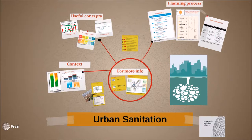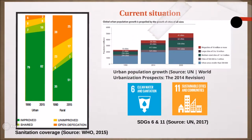The Millennium Development Goal target set to halve the proportion of the population without basic sanitation by 2015 was not met. As seen in the graph on the left, the urban population with access to improved sanitation has increased from 79% to 82% between 1990 and 2015. Even though coverage in urban areas is higher compared to rural areas, the rapid growth rate and development of slums in urban areas is cause for alarm.